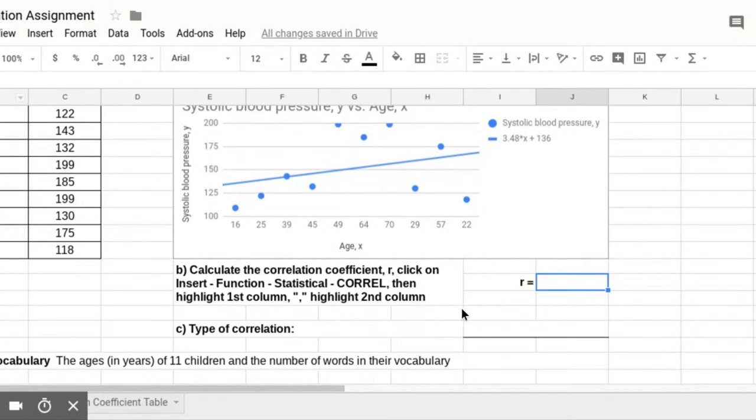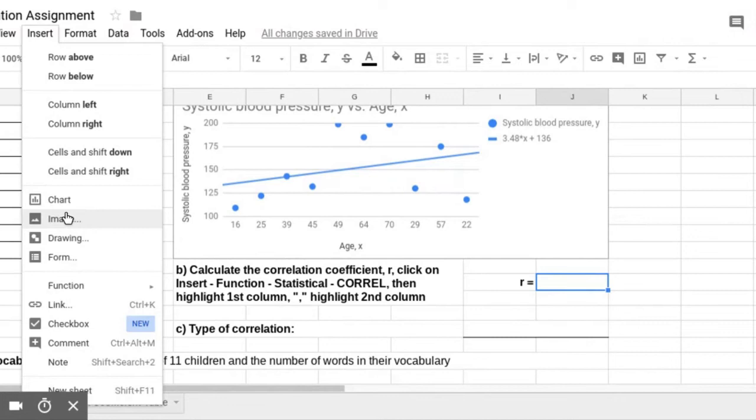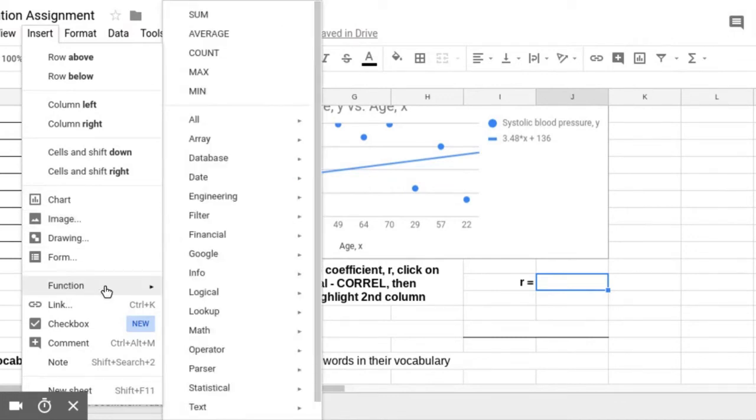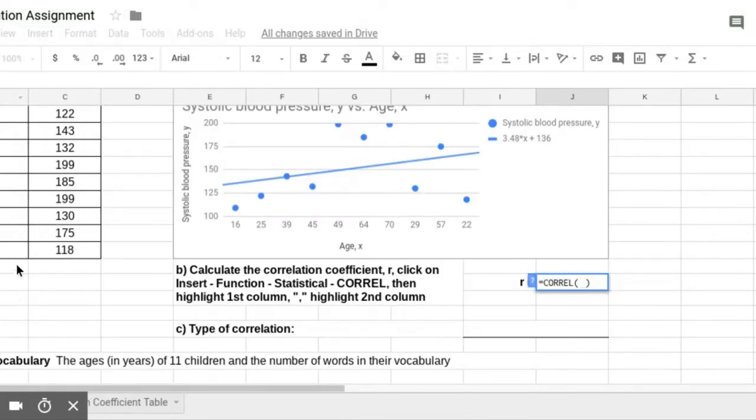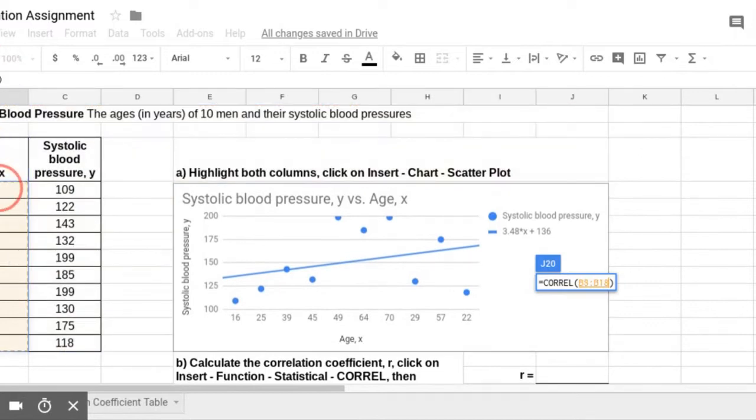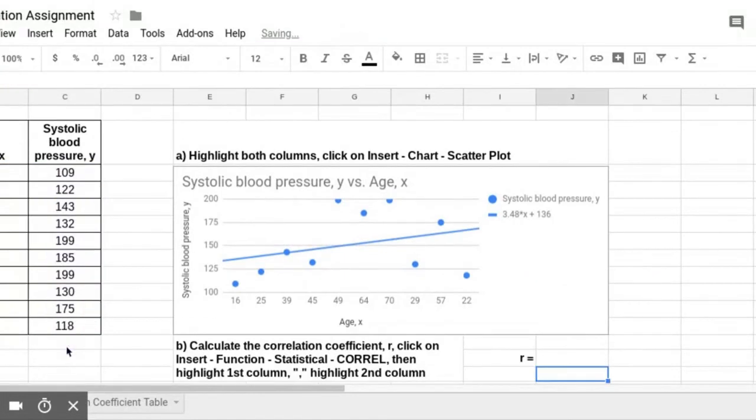All right, so for the r squared, we're going to follow these steps. You're going to calculate the correlation coefficient by going to Insert, Insert, go to the Function, click on Statistical, and then choose CORREL, C-O-R-R-E-L. Click on that, and the first thing you'll do is highlight your first column, just the numbers, push comma, and then highlight the second column. And then hit Enter.